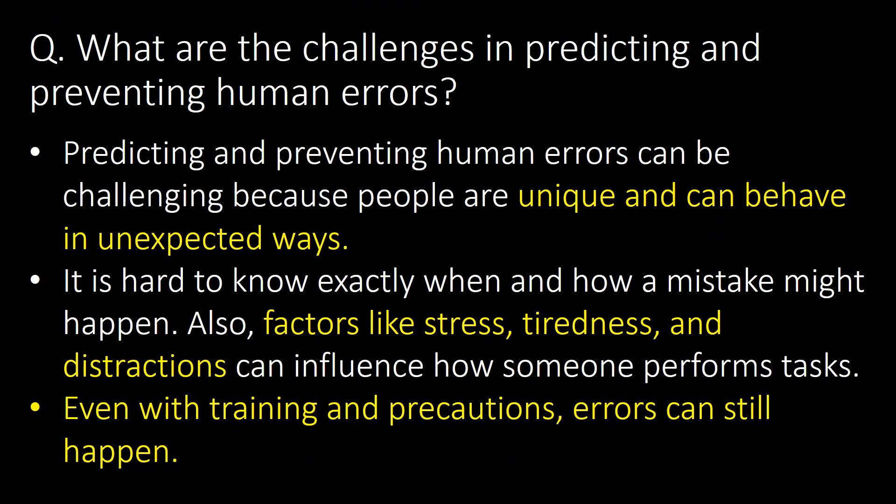What are the challenges in predicting and preventing human errors? Predicting and preventing human errors can be challenging because people are unique and can behave in unexpected ways. It is hard to know exactly when and how a mistake might happen. Factors like stress, tiredness, and distractions can influence how someone performs tasks, and even with training and precautions, errors can still occur.